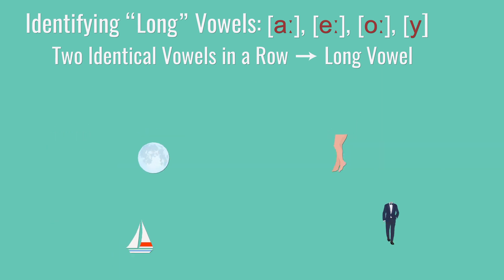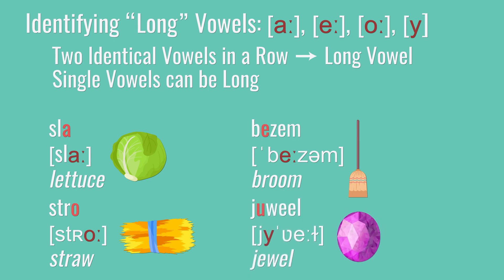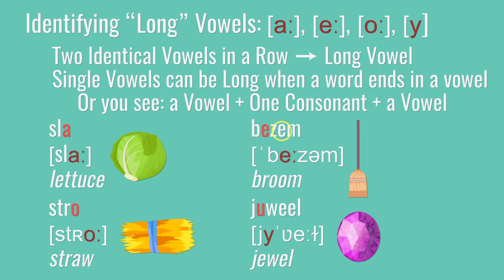Let's start by talking about how to identify the long vowels. First off, if you see two vowels in a row, then you know it's going to be a long vowel. That one is easy. So here's a as in maan, e as in been, o as in boot, and u as in kostuum. The trickier one is identifying long vowels when there's only one letter. Here's a as in sla, o as in stro, e as in bezem, and u as in juweel. The idea is that you'll use a long vowel whenever the syllable ends in a vowel rather than a consonant.